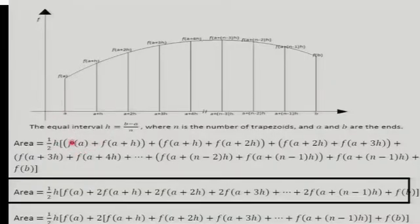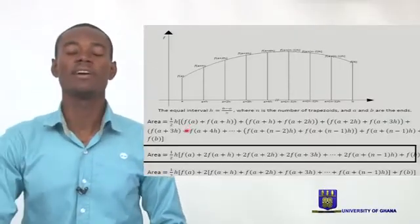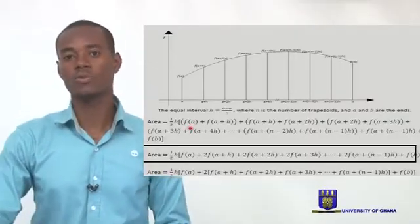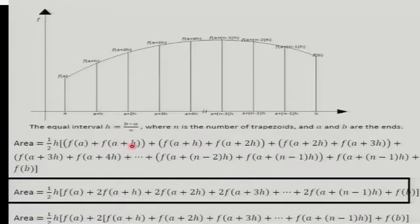Don't worry too much about this expression. F of A is just a fancy way of writing the value at point A — what we call functional notation, written in functional form to make the formula more mathematical. So this point A here is my F of A. Because we've moved a horizontal distance from A to the next point, A plus H gives us F of A plus H, and then it moves on and on like that.